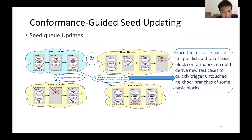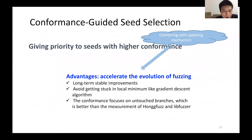We design an acute seed storage and updating strategy. Unlike traditional models, GREYONE identifies unique paths with different dataflow. Each node of the seed queue stores one unique path and its conformance. We design three updating operations: once uncovering new paths, it allocates one node for the seed queue; once uncovering an old path but with higher conformance, it replaces the relevant node; and if a test case uncovers an old path with a unique distribution of basic block conformance, it is added to the relevant node. GREYONE gives priority to seeds with higher conformance, providing long-term stable improvements and avoiding local optima like a gradient descent algorithm.